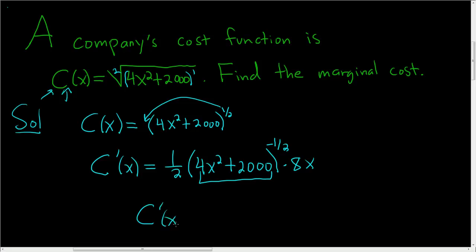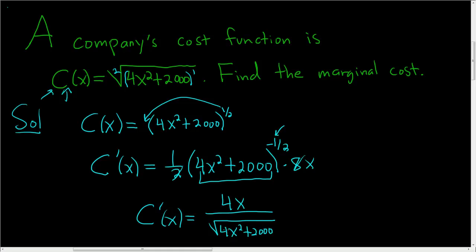For the final answer, let's clean this up. 2 goes into 8 four times, so we get 4x divided by the square root of 4x squared plus 2,000. What I did there was bring the negative 1 half downstairs so it became a positive 1 half, and then wrote it as a square root. You could simplify this a little further — you could factor out a 4 — but I think that's good enough. I hope this video helps.